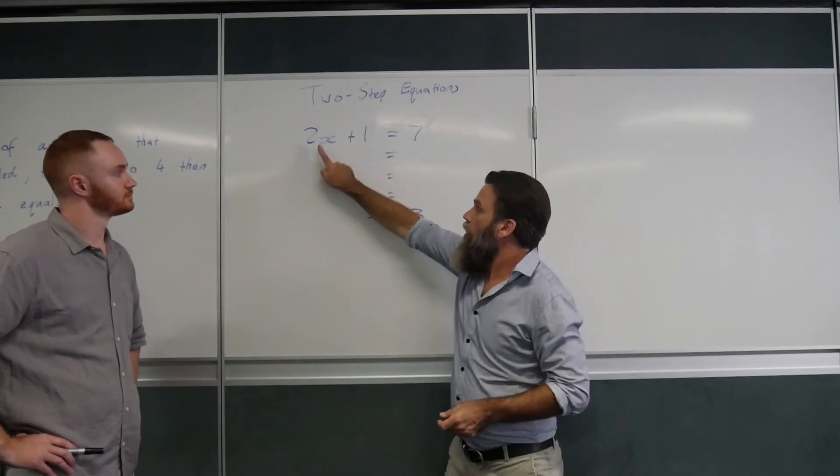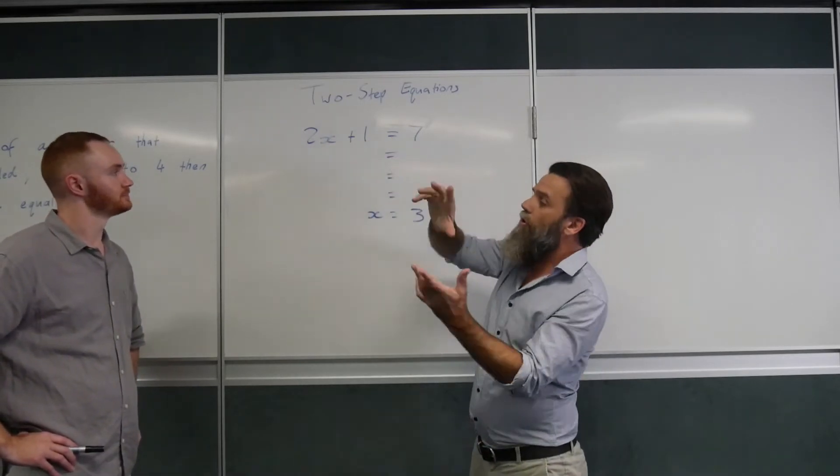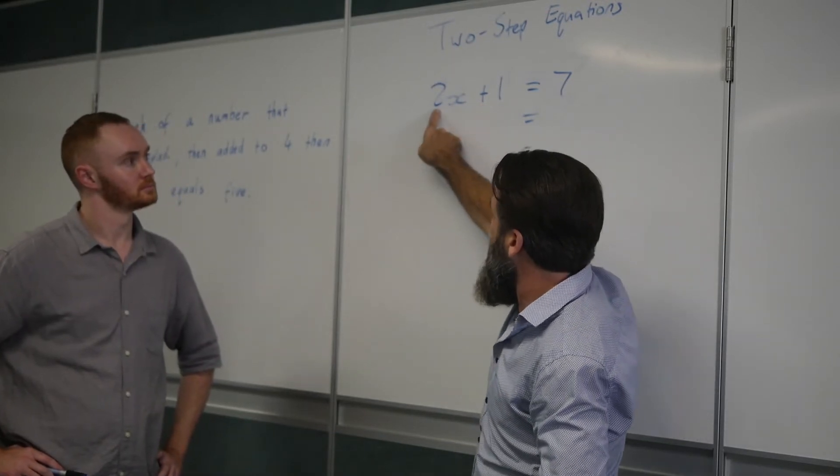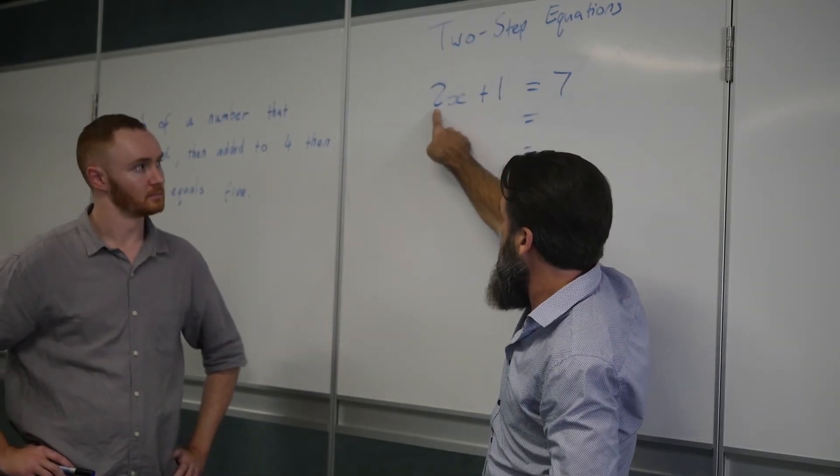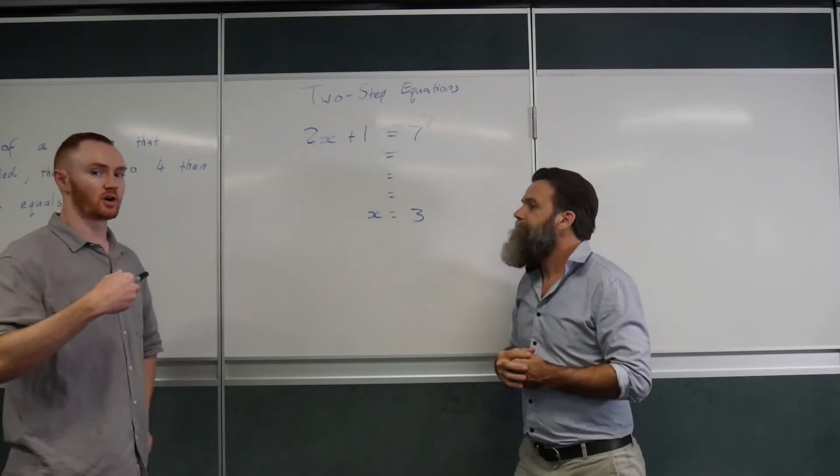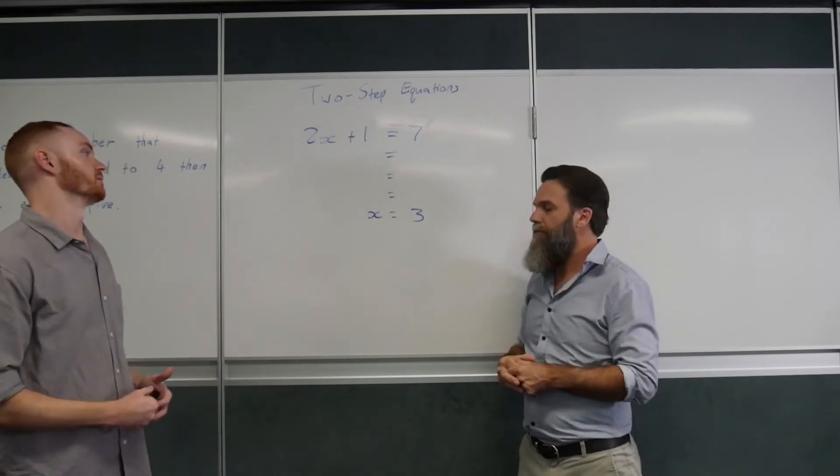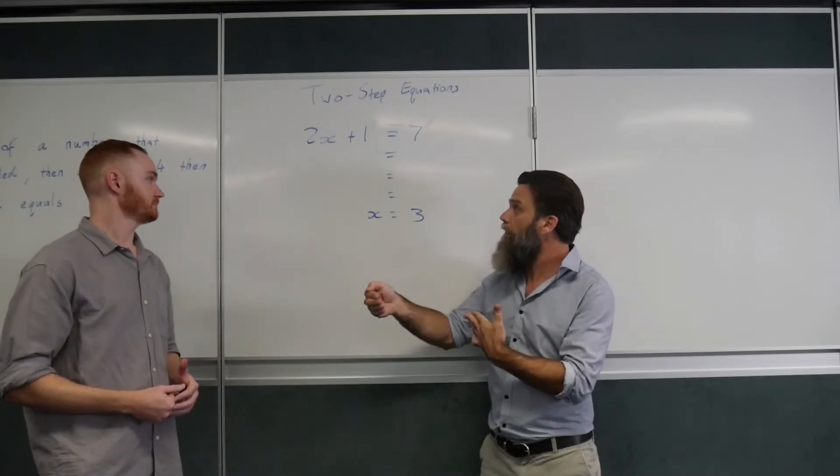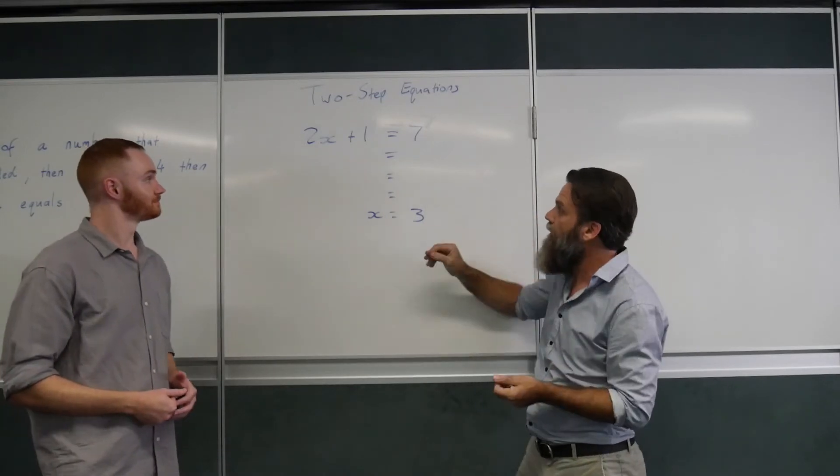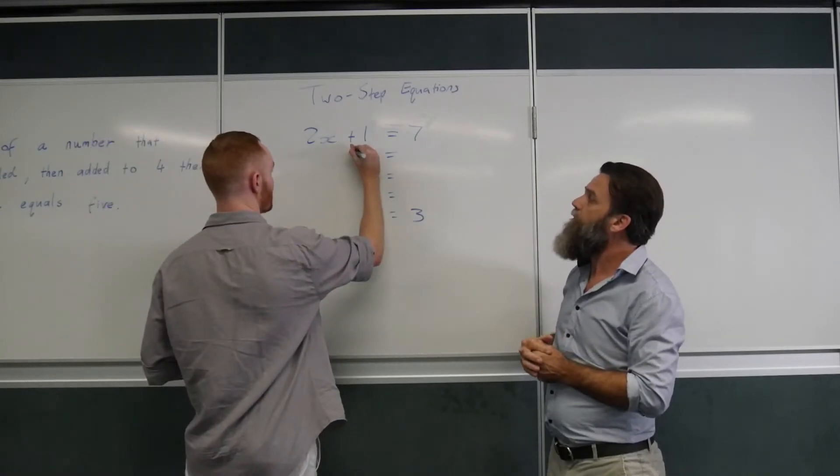So, the normal order of operations would be 2 times whatever x is, plus the 1. So, to reverse that, we need to get rid of that plus 1, then we need to get rid of the multiplied by 2. Can you remember how we get rid of that plus 1? We've got to do the opposite operation, which will be minus 1 on both sides of the equal sign. Fantastic. I love how you said it's on both sides. Keeping those equations balanced on both sides is the most important thing we can do. So, if we take 1 away from that side, what are you going to be left with? Just the 2x.